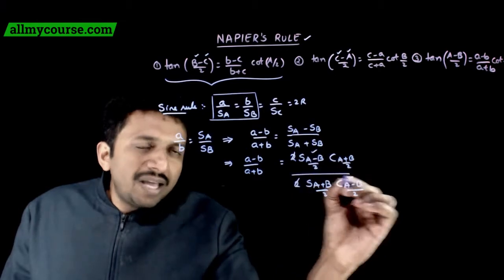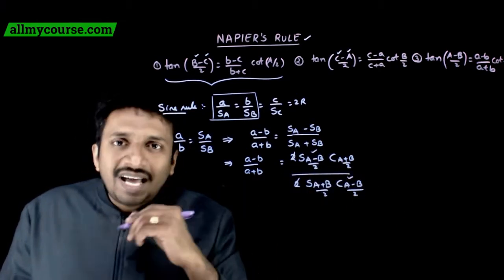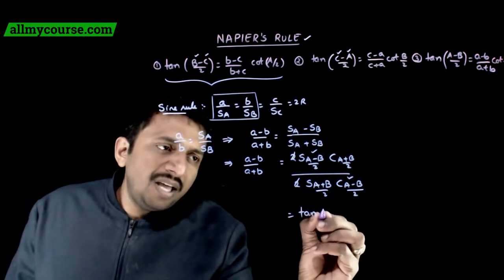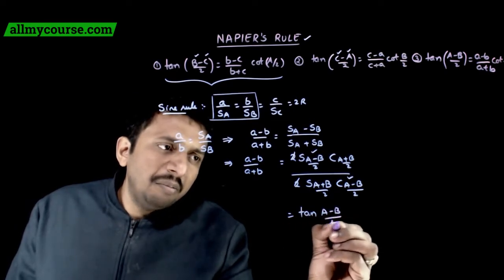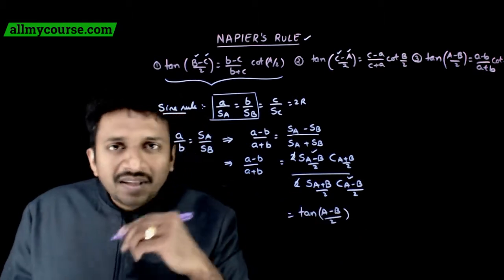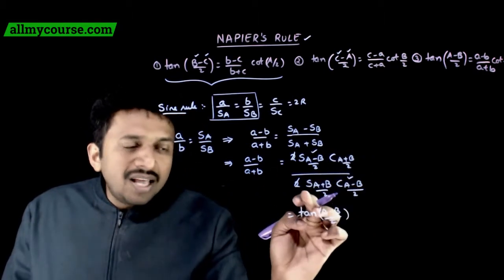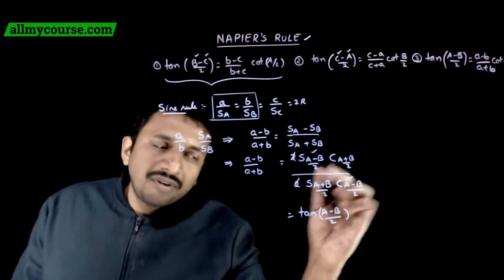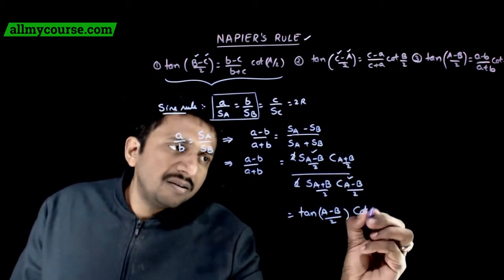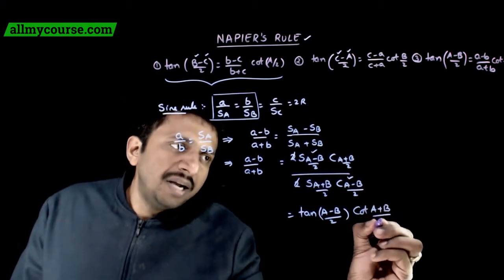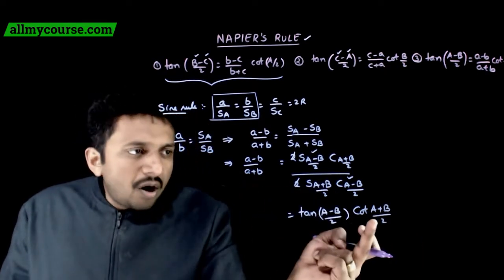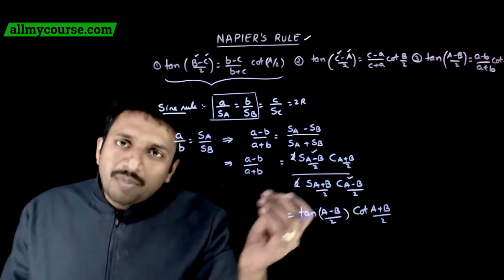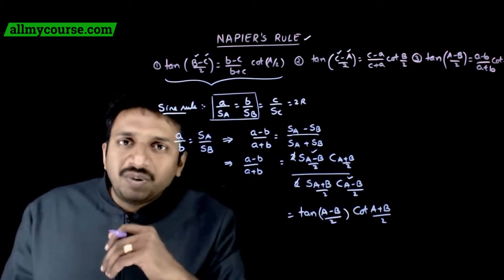After cancellation, we get sin((A minus B)/2) over cos((A minus B)/2), which is tan((A minus B)/2), multiplied by cos((A plus B)/2) over sin((A plus B)/2), which is cot((A plus B)/2). When cot((A plus B)/2) moves to the other side, it becomes tan((A plus B)/2).